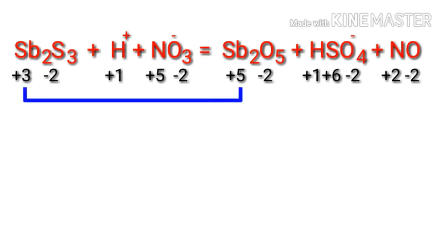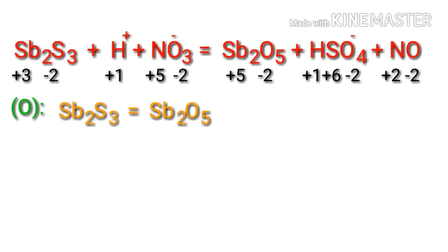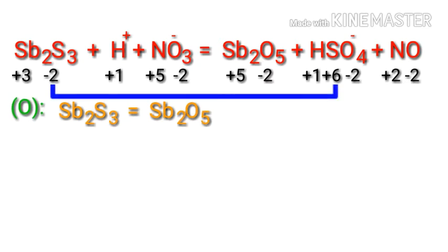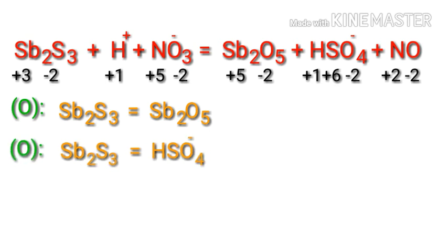In this reaction, antimony has a charge of plus 3 and it is changing into plus 5, so antimony is being oxidized. Sulfur has a charge of minus 2 and it is changing into plus 6, so sulfur is also being oxidized. Now you can write the two oxidation reactions in one equation.